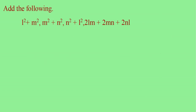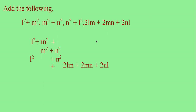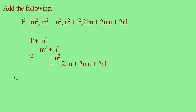Now try yourself: add the following — L squared plus M squared; M squared plus N squared; N squared plus L squared; 2LM; 2MN; 2NL. First write the first expression, then add the second — M squared should come in the same column as M squared. There is no N squared in the first term so write it separately. Now write the third: N squared just below N squared, L squared just below L squared of the first expression. Since there is no LM, MN, or NL in the previous expressions, write those separately. Now you can add.